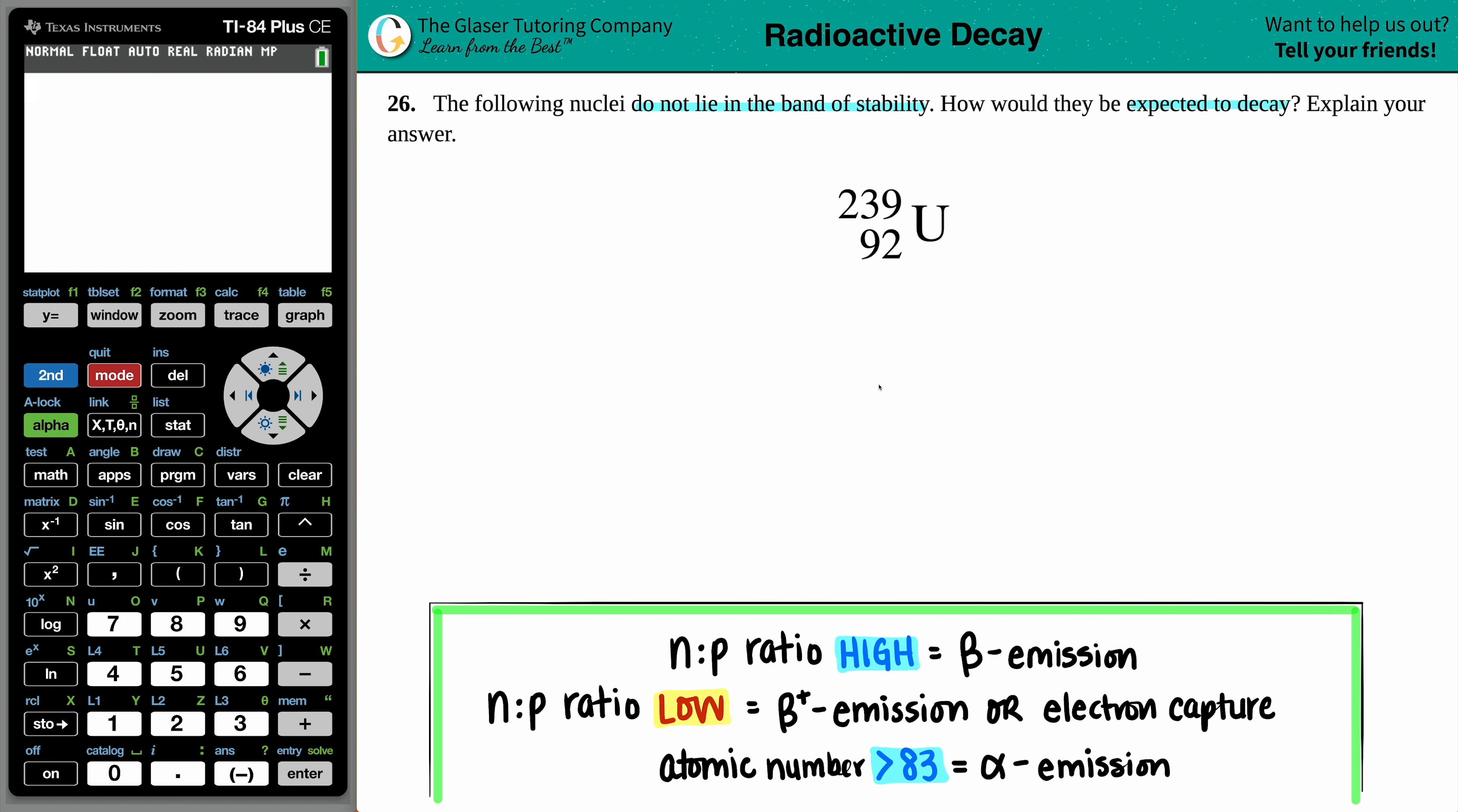So in this case, what's going to happen? Well, the first thing I would do is I would always look at that atomic number. Chances are higher atomic numbers are always going to decay one way, and that's if you have an atomic number that's greater than 83. 83 is the lucky number here. We have an atomic number of 92, which is greater than 83, wouldn't you say?